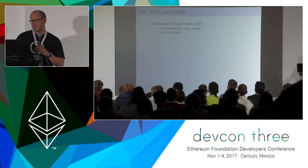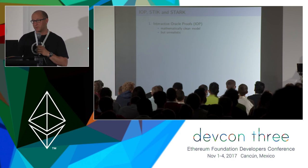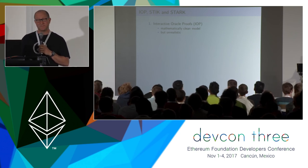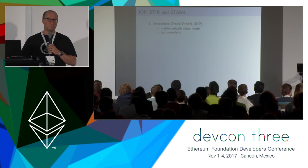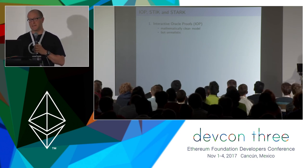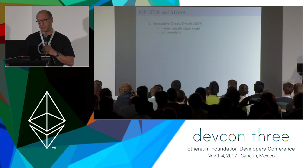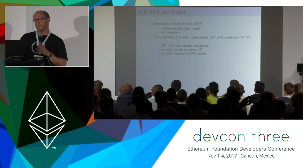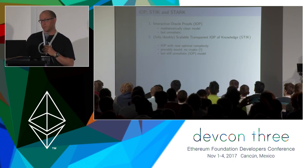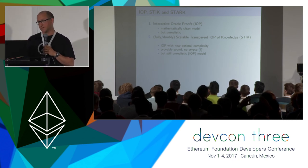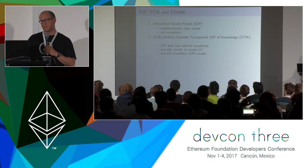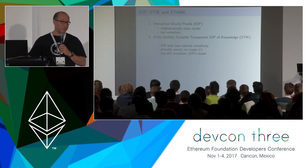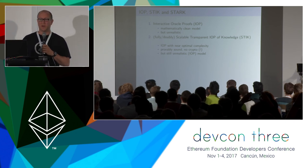I'm going to tell you about something called an interactive oracle proof. It's a kind of game that mathematicians like to study. It's very clean mathematically, and you can make a lot of progress studying this game, but it's unrealistic if you want to use it in practice. Then I'll tell you about a special kind of IOPs — interactive oracle proofs — that are really, really efficient, almost optimally so, and we can prove a lot of things about them even without any cryptographic assumptions. But again, they are unrealistic.